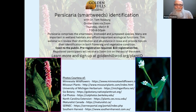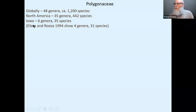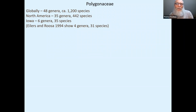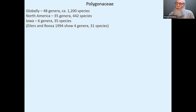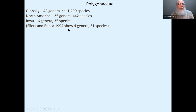This suggests that if any kind of restoration work is being done in a wetland environment that hasn't had a wetland for a while, there could still be some seed there. Now let's take a look at the family — smartweeds are in Polygonaceae. It's a medium-sized family, with globally about 50 genera and 1,200 species, and in North America about 35 genera and over 400 species.